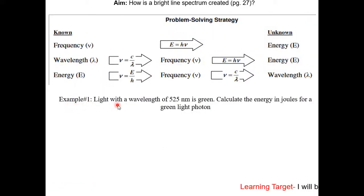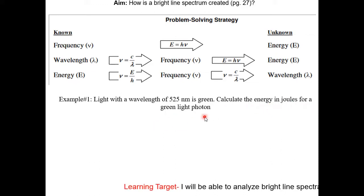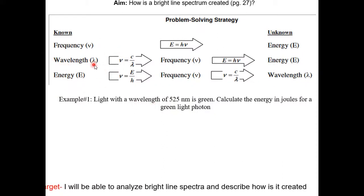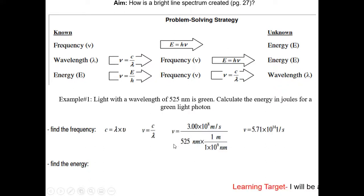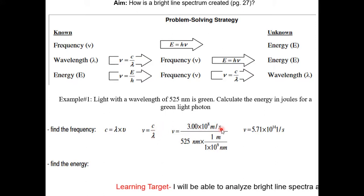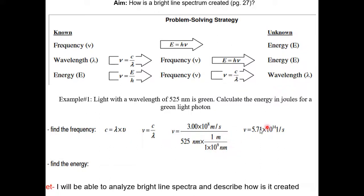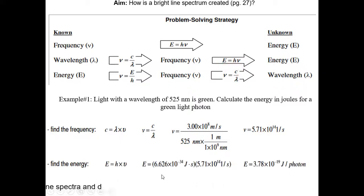Let's do one example before concluding this lesson. Light with a wavelength of 525 nanometers is green — calculate the energy in joules for the green light photon. We are given wavelength, so we convert from wavelength to frequency to energy. First, frequency equals the speed of light over wavelength. The speed of light is in meters per second, so you must convert 525 nanometers to meters. Once you have frequency, plug it into E = hν using Planck's constant to solve for energy. This gives us our final energy value in joules.